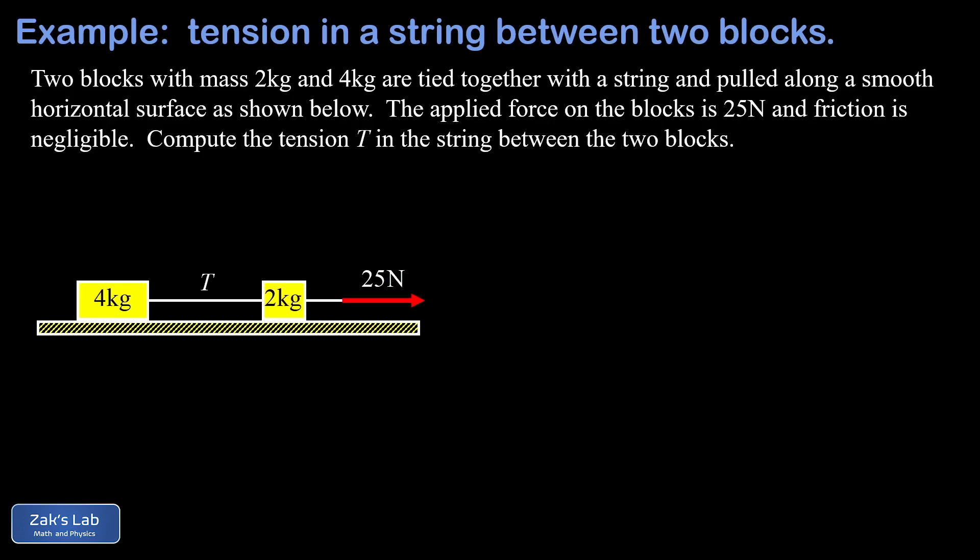These blocks are pulled along by an applied force of 25 newtons, pulling horizontally to the right. The goal of the problem is to find the tension in the string that connects these two blocks, and we're actually going to explore a couple different ways of solving the problem and then checking our work.